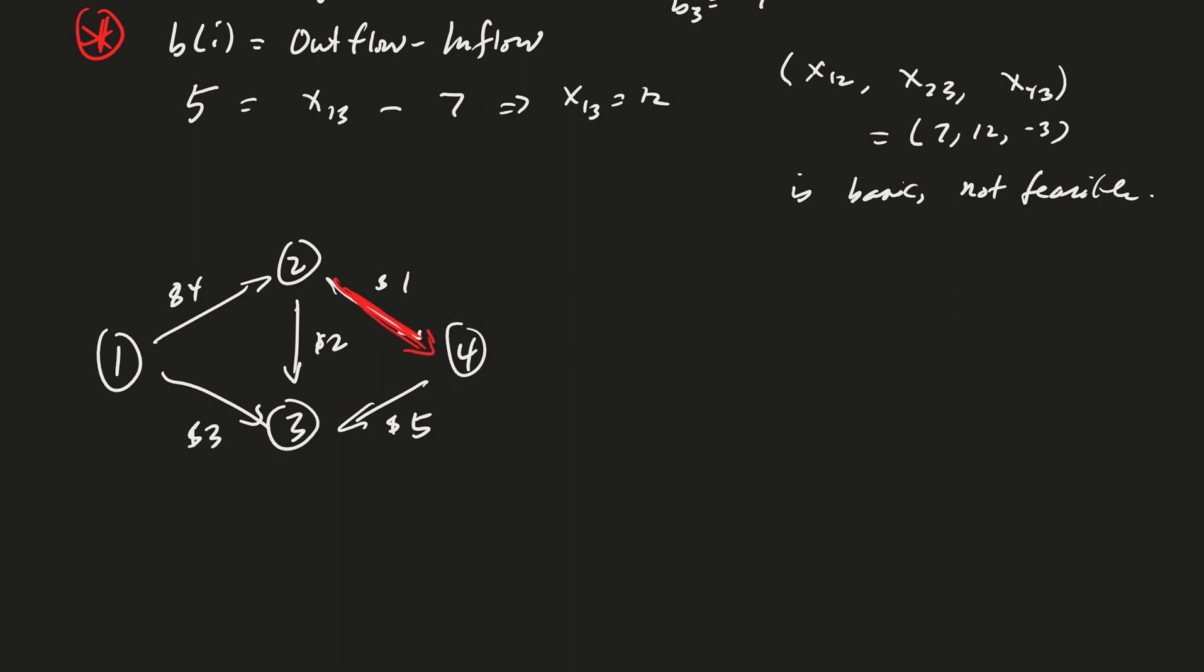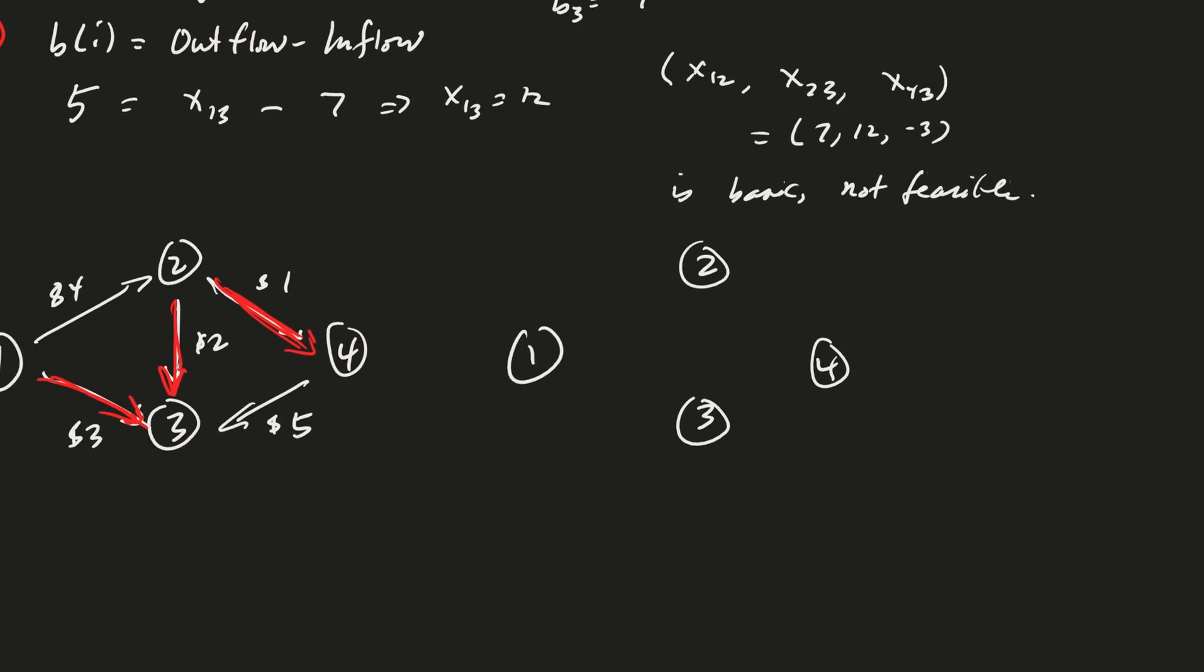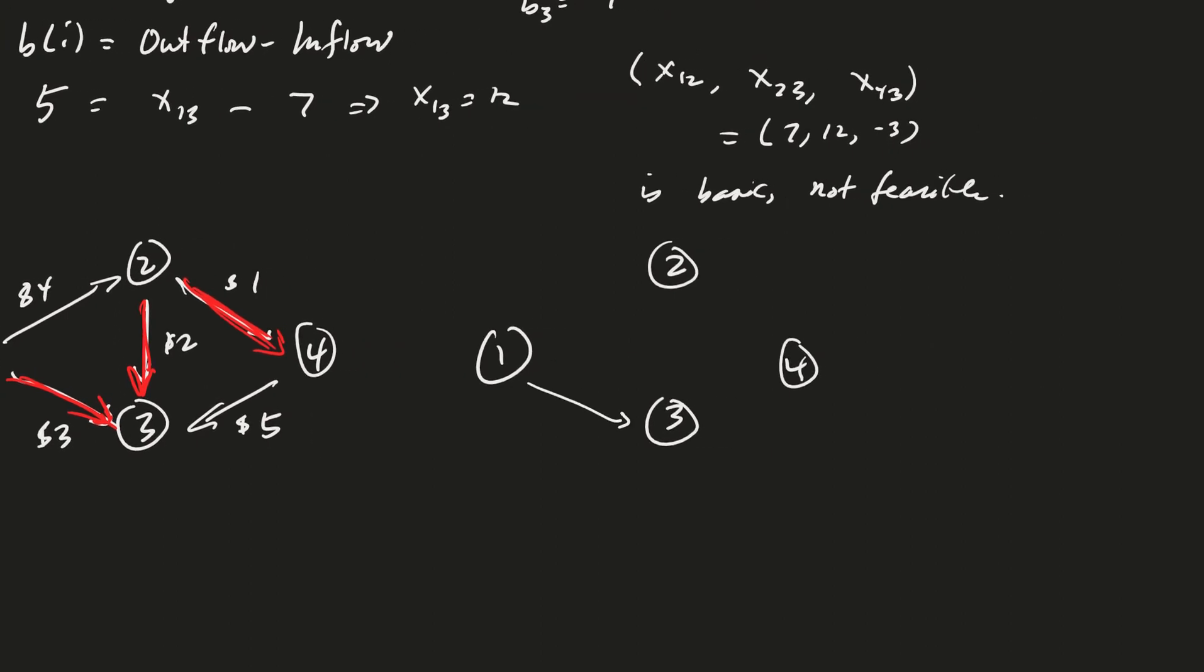So our edge 2, 4 we'll keep. Next up is 2, 3, so we'll keep that edge. And then edge with cost 3 will be that one. And so let's see what happens with that as our network here. I'll just redraw it so it's easier to see. Okay. It goes that way, that way, and that way.